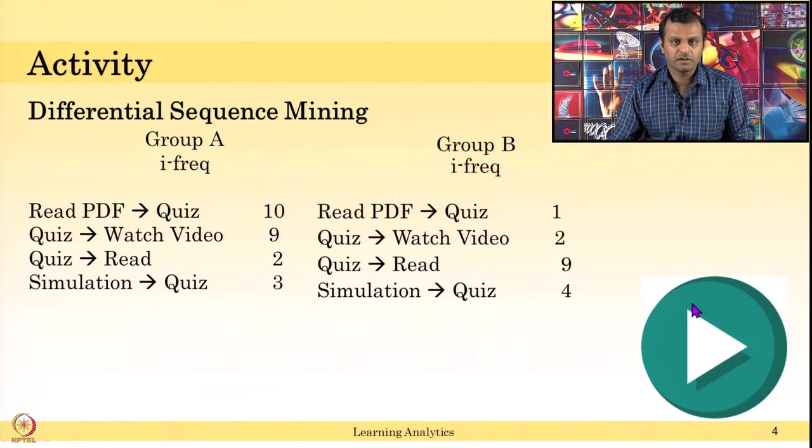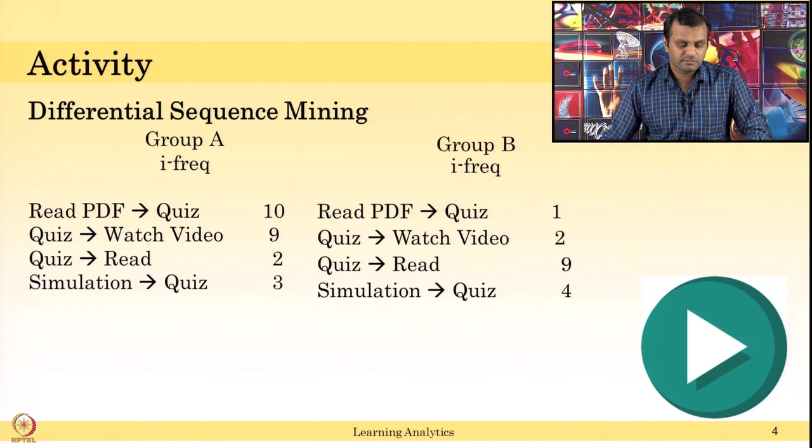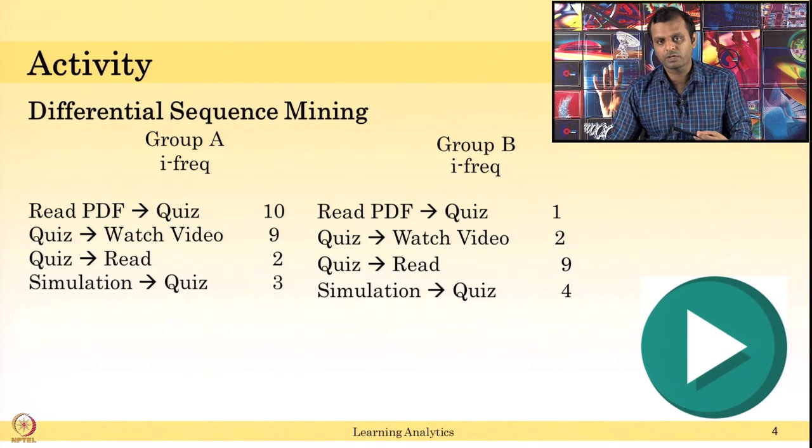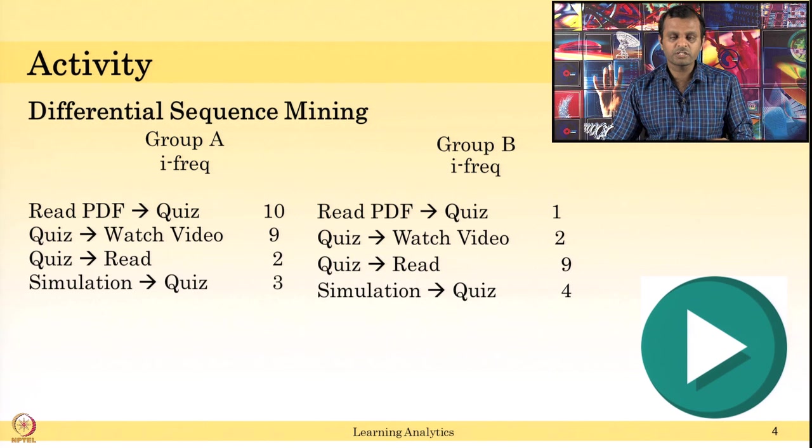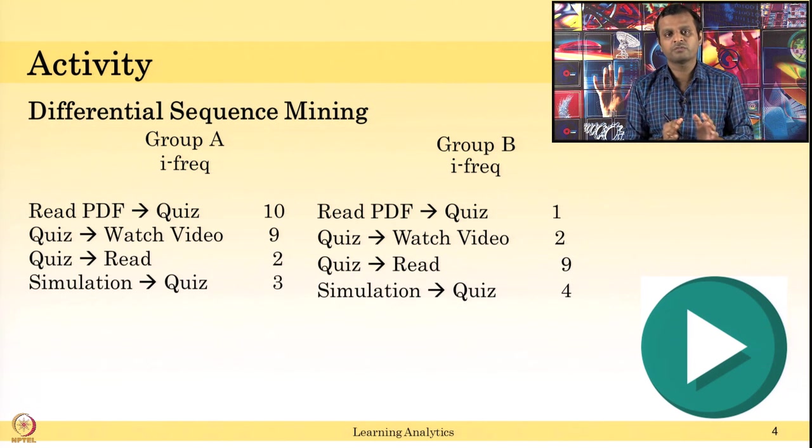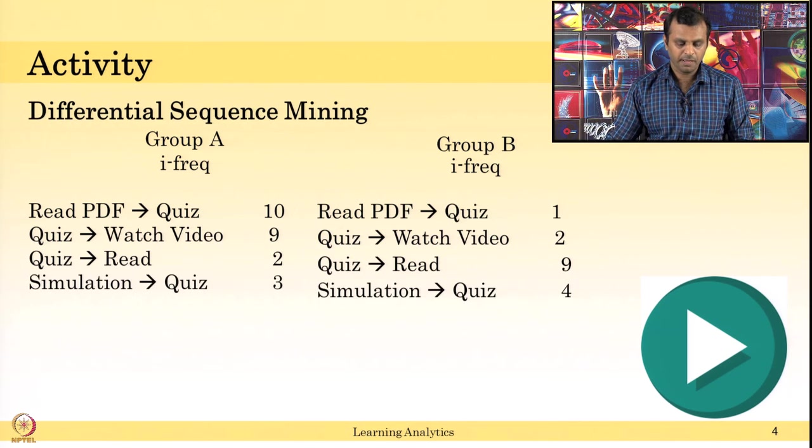That is the activity. It is easy to identify - I already gave the answers. You can talk about which patterns occurred more frequently in Group A, which pattern occurred more frequently in Group B, which pattern occurred similarly in both groups. That is what I want you to think. There are four patterns classified into three groups: a pattern which occurred more in Group A, a pattern which occurred more in Group B, a pattern which occurred in both groups.